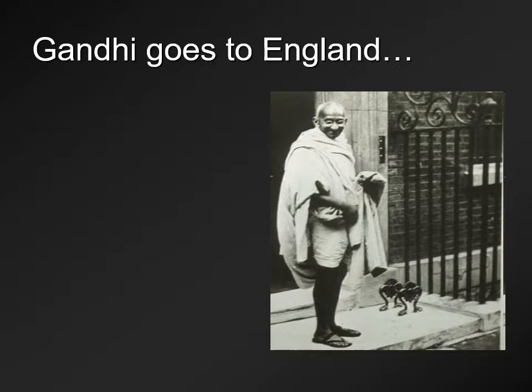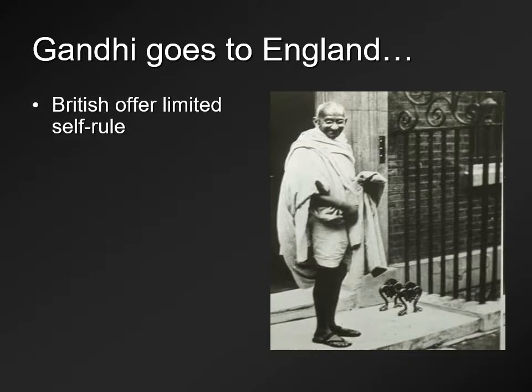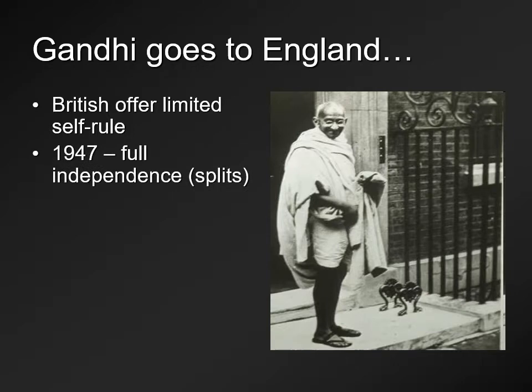England basically invited Gandhi to the Viceroy's palace for talks. British workers actually met him and loved him — Gandhi was very popular among the English population. You'd think textile workers wouldn't like him, but he visited their factories and said his fight was not with them, only that India wanted freedom. The British offered India limited self-rule. By 1947, this actually meant full independence.